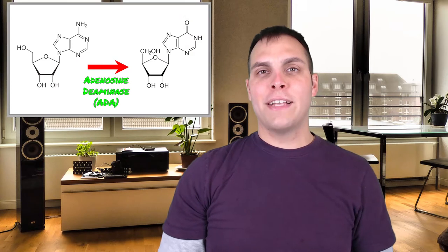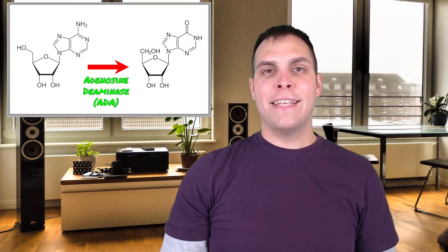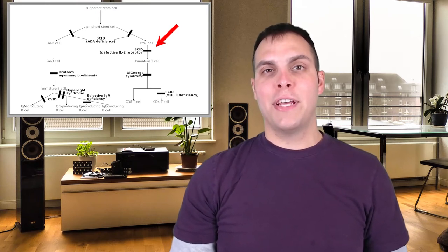The mutations occur either in the interleukin-2 receptor or they affect an enzyme called adenine deaminase, or ADA. If the mutation is in the IL-2 receptor, that will mainly impact T cell function, since interleukin-2 is a cytokine responsible for T cell proliferation and activity. If it is a mutation that impacts adenine deaminase — ADA deficiency — this form of SCID targets not only T cells, but also B cells and natural killer cells.